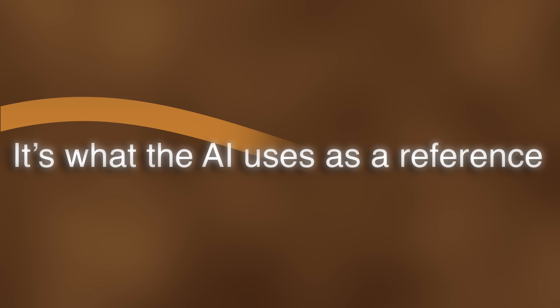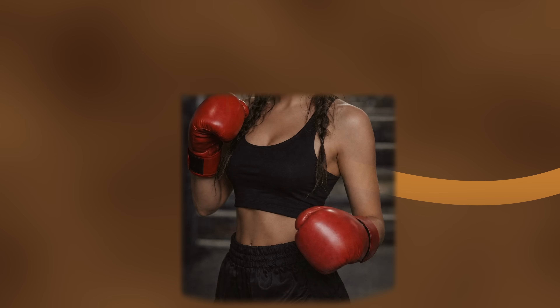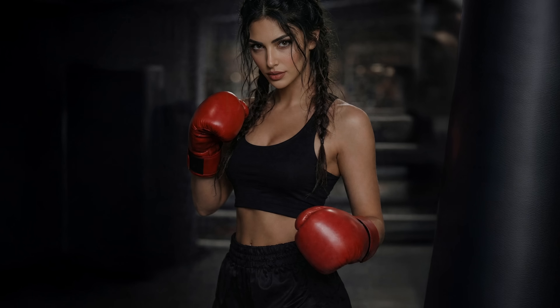But here's the thing: the problem starts with the very first image. That first frame is not just a picture — it's what the AI uses as a reference for the face, for the outfit, for the whole scene. If that first image is unclear, the AI starts guessing. And once it starts guessing, you lose consistency.